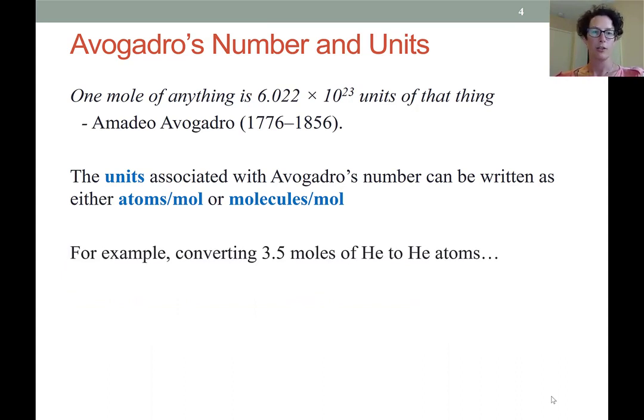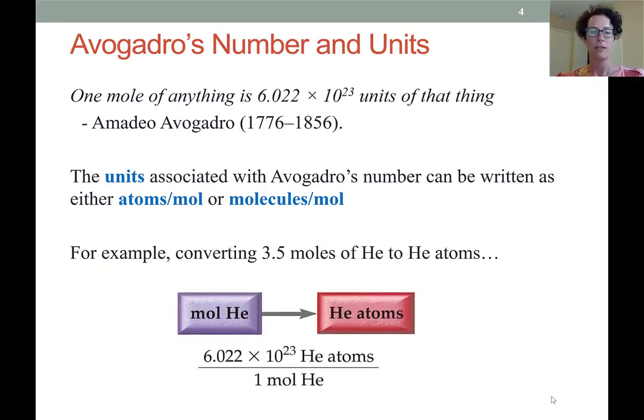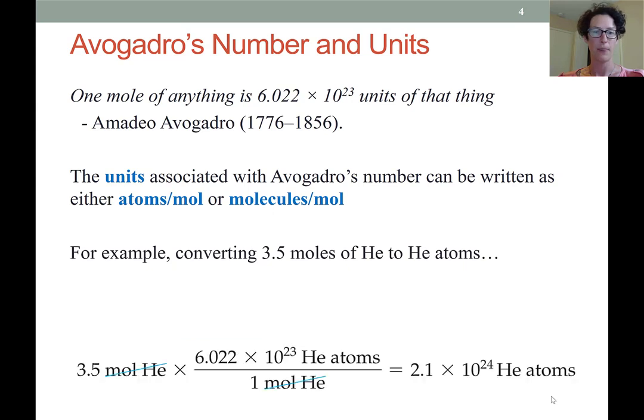If we wanted to convert between molar amount and find out exactly how many atoms were composed within that, we would use the equivalency of 6.022 times 10 to the 23 being the number of individual units, be that atoms or molecules, versus one mole. In this example here, we're converting between 3.5 moles of helium to find out how many atoms that represents. We do a simple dimensional analysis where we use our Avogadro's number as our equivalency, and you can see that moles crosses out and we're left with atoms.